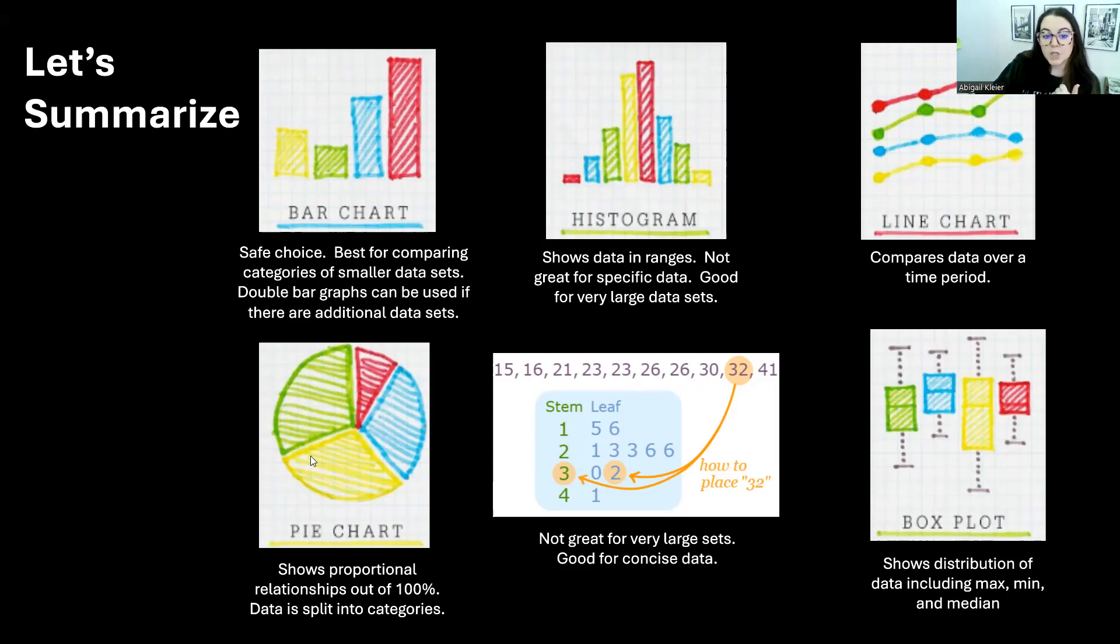Then we have a pie chart or a circle graph. Both terms are appropriate. A pie chart or a circle graph is in a circle and it has different sectors. Each sector represents a different category. The key with circle graphs and pie charts is it's a proportional relationship out of 100%. We're looking for keywords anytime we want to use a circle graph. We want to look for keywords like proportion, 100%, percentage. All of these are keywords that would indicate to us that a circle graph would be the best graphical representation.